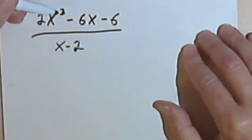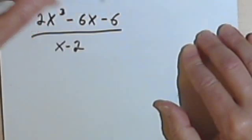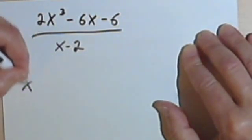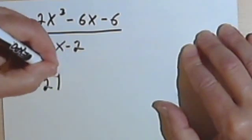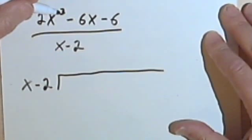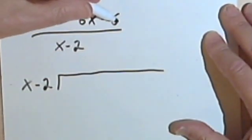We've got 2x to the third minus 6x minus 6 divided by x minus 2. So I'm dividing by x minus 2 and I'm dividing into 2x to the third minus 6x minus 6.